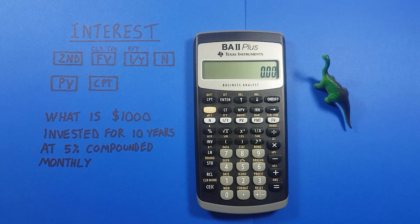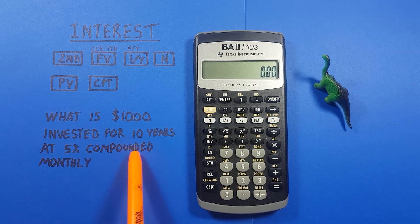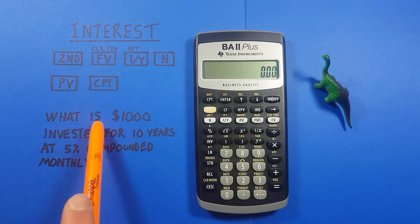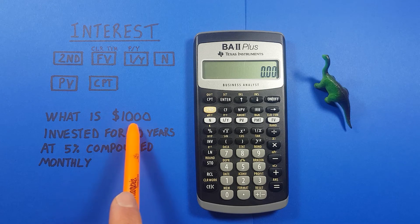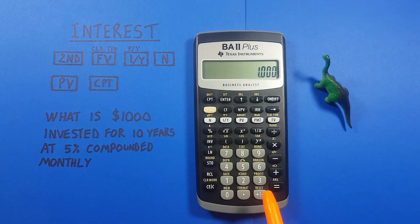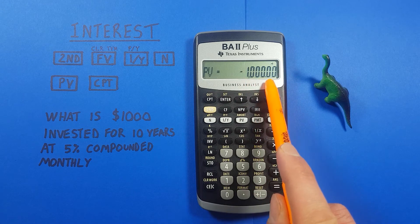We're now ready to enter our new data. The question was: what is $1,000 invested for 10 years at 5% compounded monthly? You can enter it in any order, but I like to enter it in the order of the question so as not to miss anything. We start with $1,000 as our PV or present value. This calculator likes your initial investment to be a negative, so we turn that negative and press the PV key. We see PV equals negative 1,000.